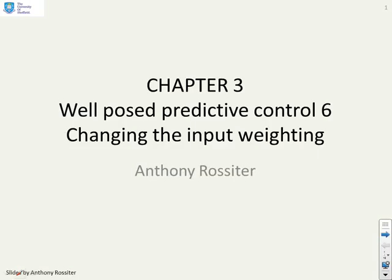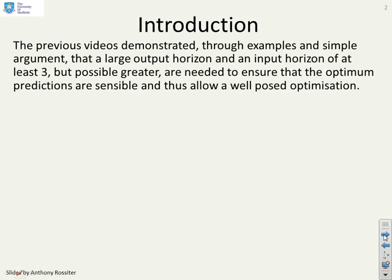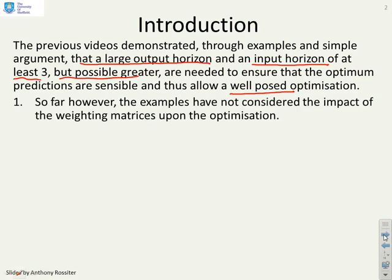This video looks at the impact of changing the input weighting on predictive control. Previous videos have demonstrated through examples and argument that if you have a large output horizon and an input horizon typically of at least 3 but often greater, then the optimization you get from GPC is usually well posed. You'll get sensible predictions and probably sensible performance.